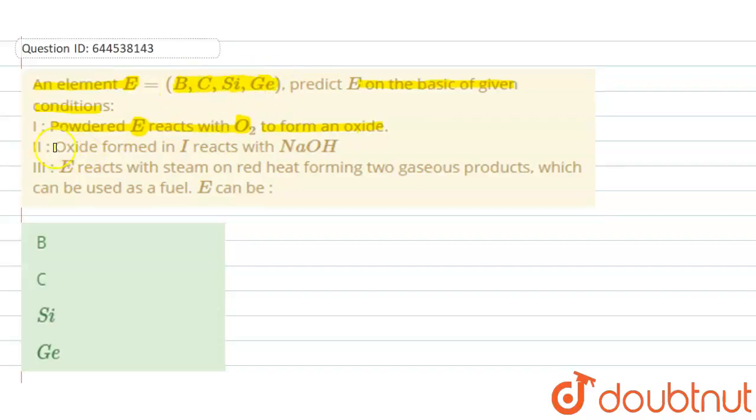Second is oxide formed in first reacts with NaOH. So yes, all of these compounds - all of the oxides of all of these compounds have the tendency to react with NaOH.